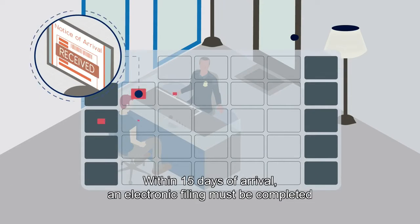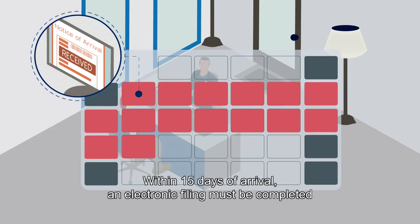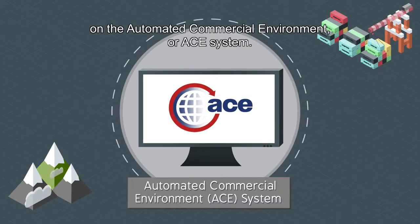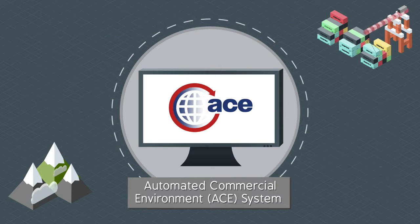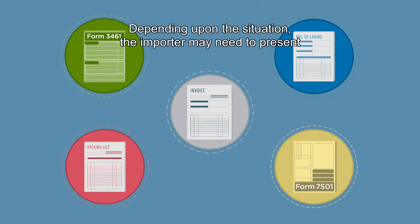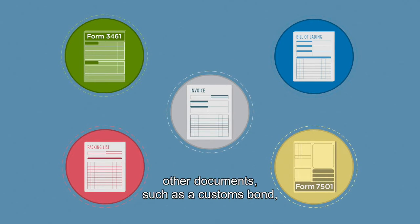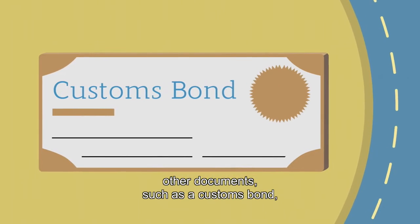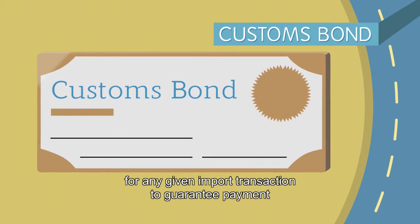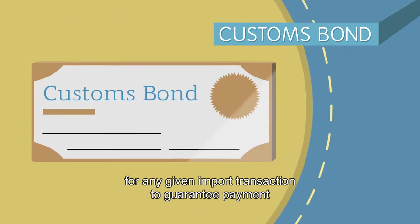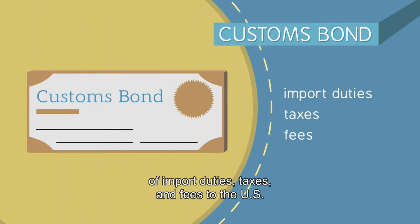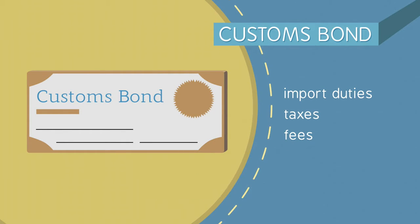Within 15 days of arrival, an electronic filing must be completed on the Automated Commercial Environment, or ACE, system. Depending upon the situation, the importer may need to present other documents, such as a customs bond, which is a contract between customs and an importer for any given import transaction to guarantee payment of import duties, taxes, and fees to the U.S.